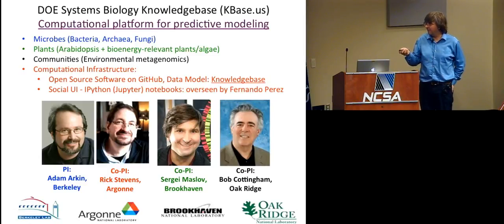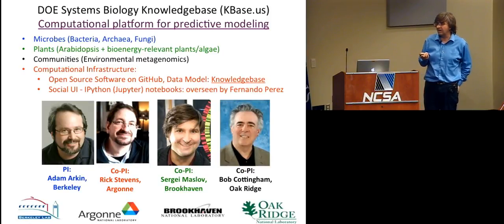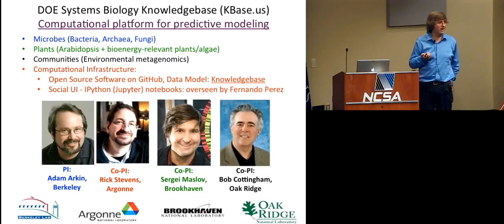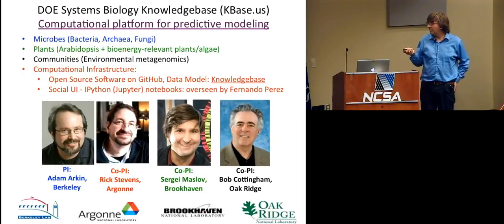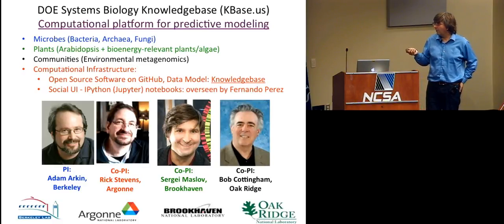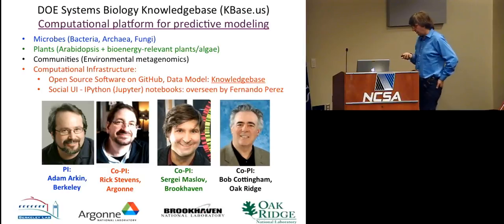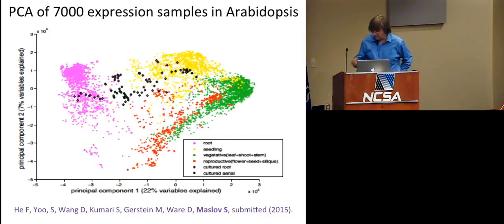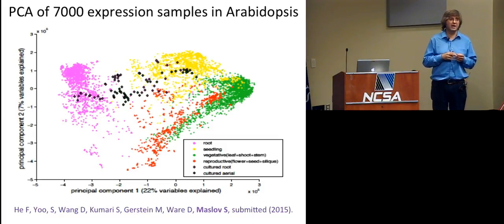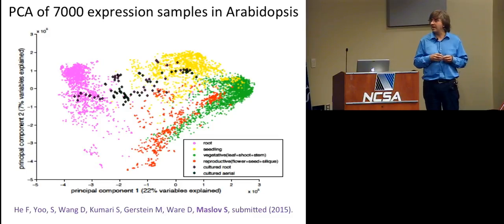But again, a little bit more about the project. There are four labs, four national labs involved. The main lab, the PI of the project is Adam Arkin at Berkeley. And then Rick Stevens, many of you know Rick, who is your neighbor and also a high-performance computing guru at Argonne. Myself at Brookhaven and Cold Spring Harbor. And Bob Cottingham at Oak Ridge. So enough about projects, and let me give you briefly a flavor of data and things we are working on in the K-base.